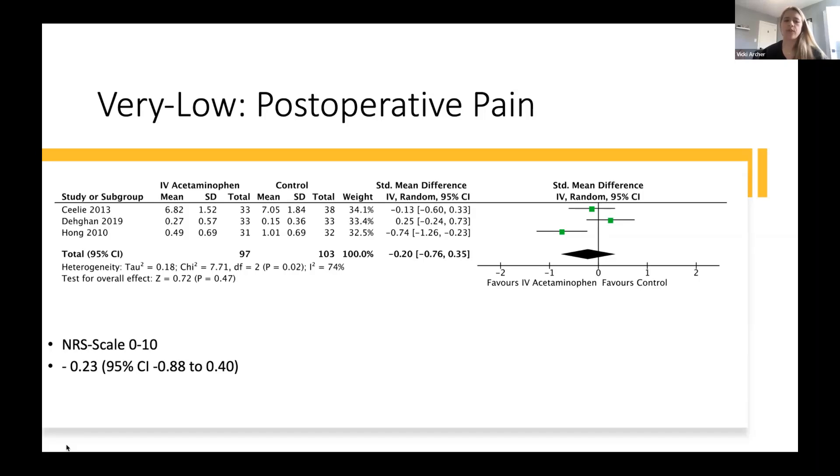With a confidence interval ranging from a decrease of 0.88 to an increase of 0.4. We had set our threshold for clinical significance to be 1 out of 10 on a scale of 1 to 10, so this outcome does not meet our pre-specified criteria for change. Ultimately, this evidence was rated down due to the significant heterogeneity that you can probably see here in the forest plot, as well as imprecision, which is largely related to the small sample size, and concerns for risk of bias.